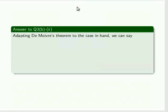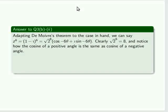Adapting De Moivre's theorem to the case in hand, we can say that z to the power of 6 is (1 - i) to the power of 6. We have to take r, which is root 2 to the power of 6, and then we can multiply 6 by the theta. Now clearly, root 2 to the power of 6 is 8,